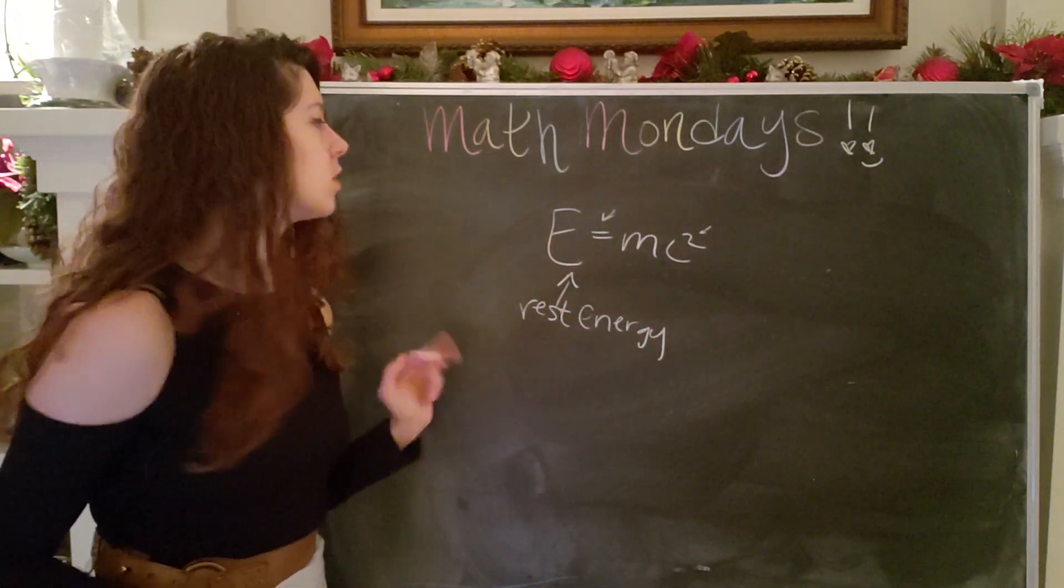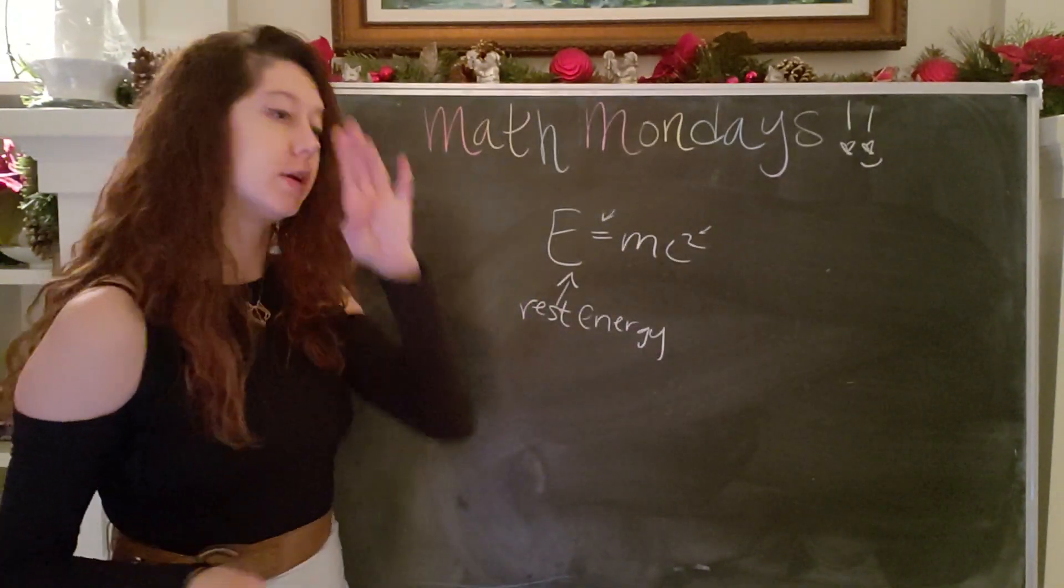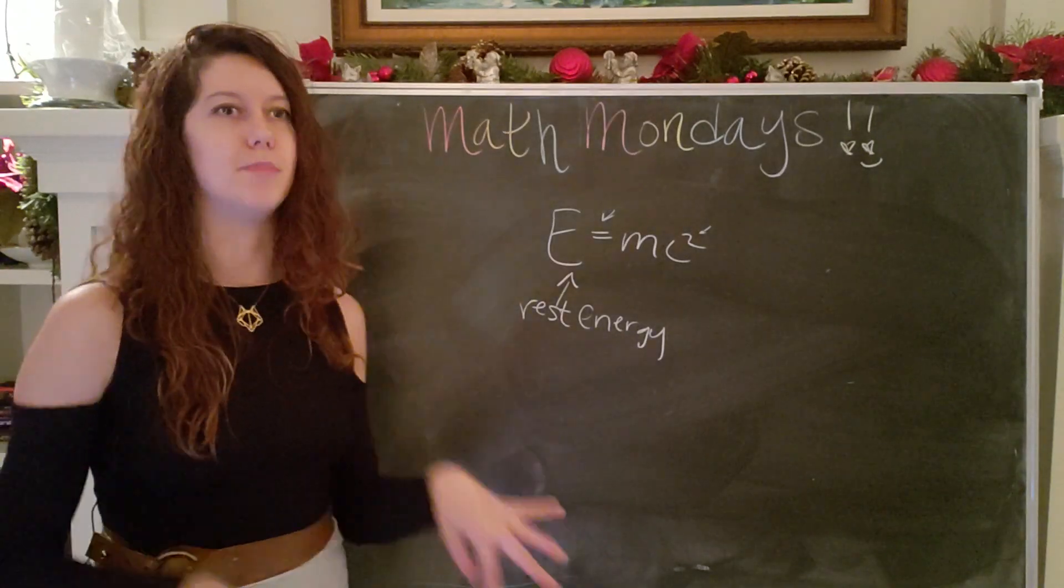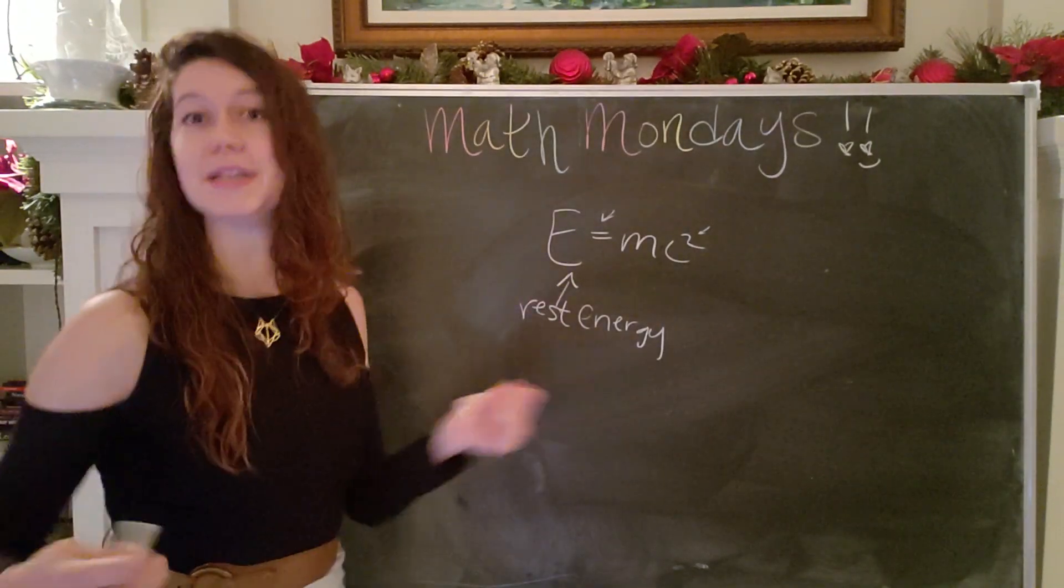Quarks make up protons and neutrons, but electrons are a true fundamental particle. Meaning as far as we know, there's nothing that actually makes up an electron. It just is an electron.